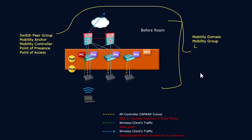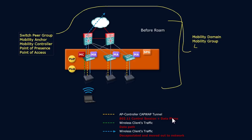The key thing is that wireless LAN controllers in a mobility group in a centralized, rather than converged, environment will enable roaming. The way roaming occurs is based upon establishing CAPWAP tunnels, which are necessary to move traffic correctly so that it leaves the right controller. Those tunnels are established on demand in a mobility group, but with a switch peer group, those CAPWAP tunnels are going to be built automatically — they are pre-built.